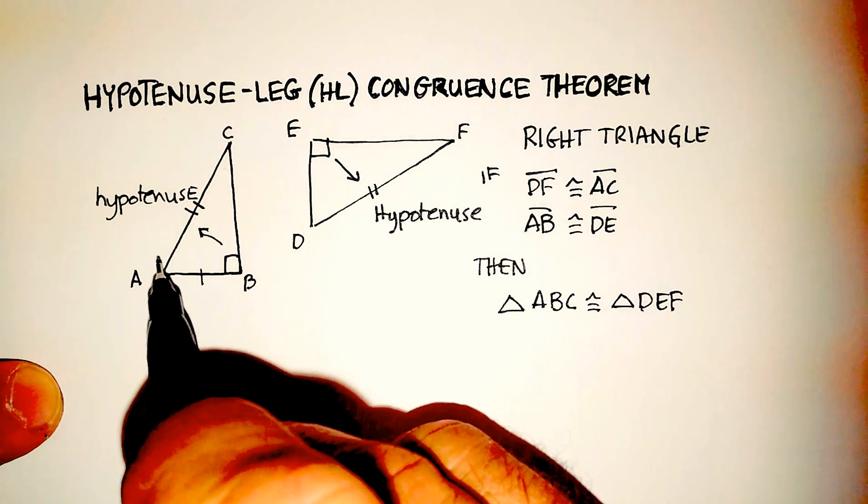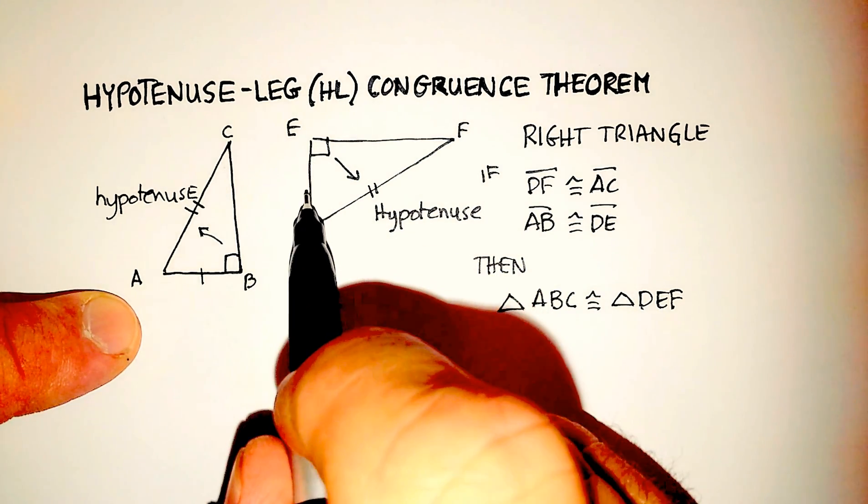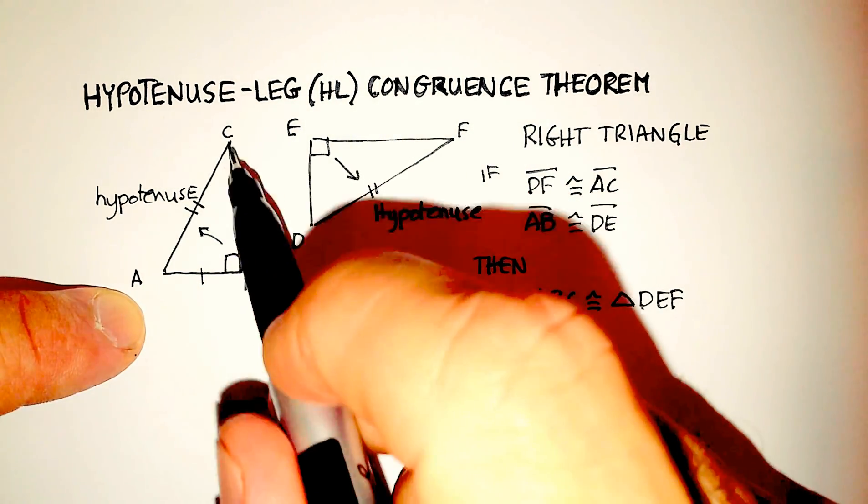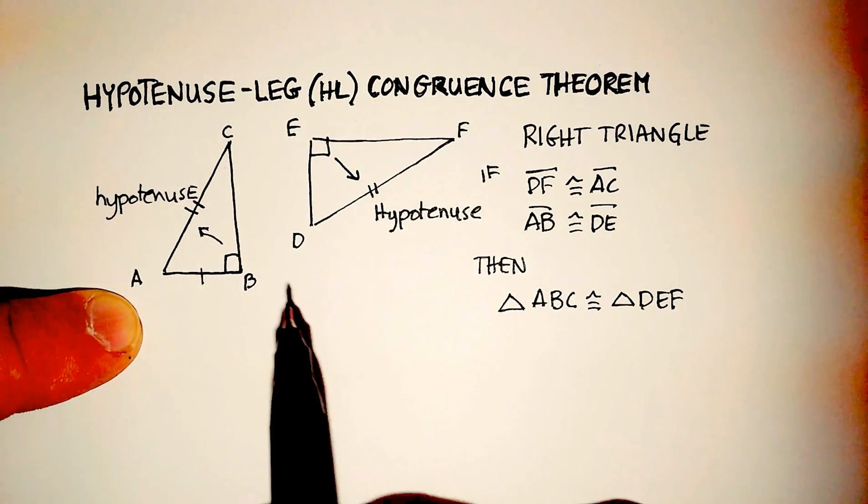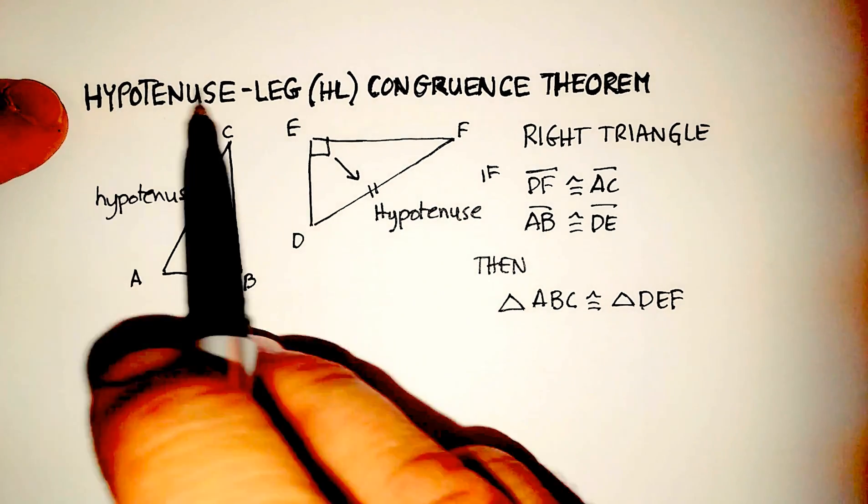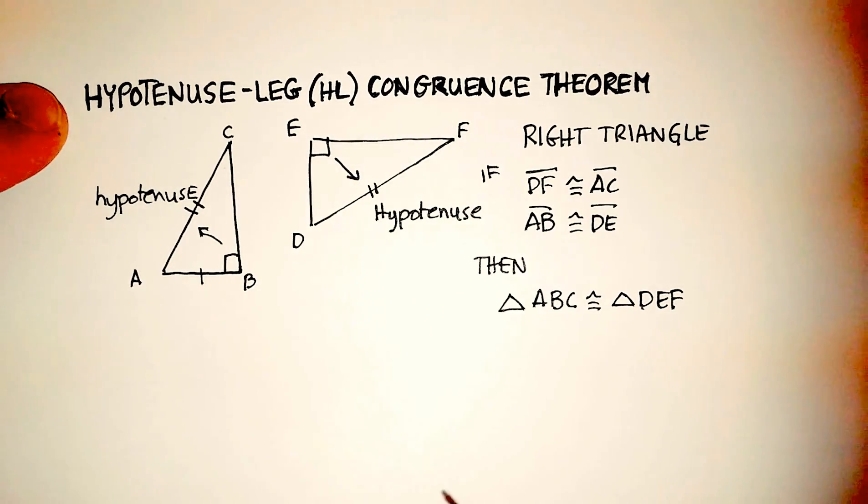So again, remember what happens. You only need one of these two legs. Now it could be this leg, the short leg in the right triangle, or it could be the long leg in the triangle. It doesn't really make any difference. All you need is the hypotenuse and one of the legs, hence HL, to be the same in a right triangle, and then you would have congruent triangles.